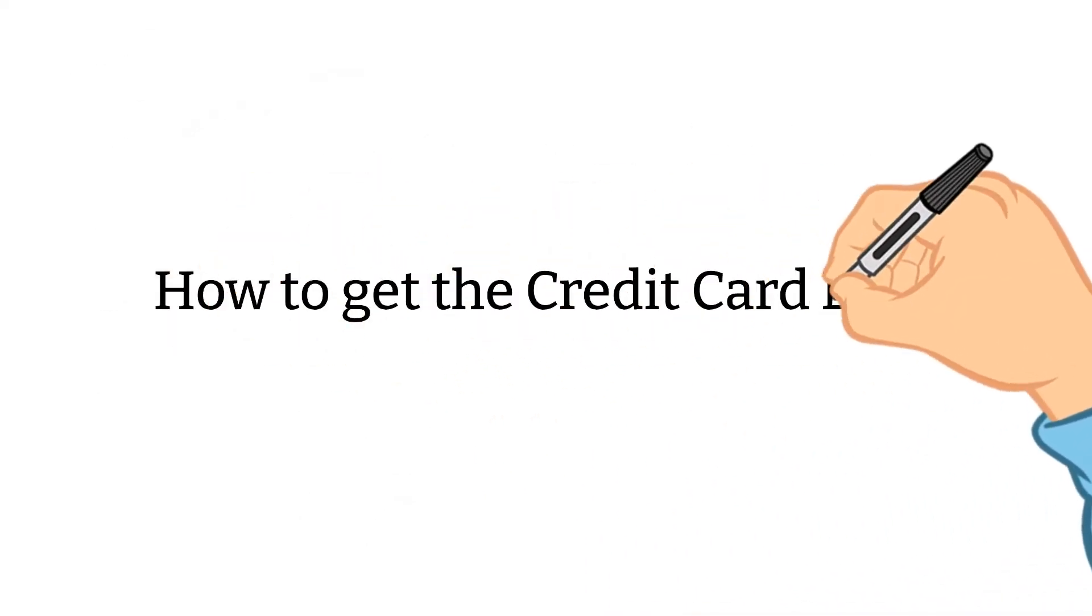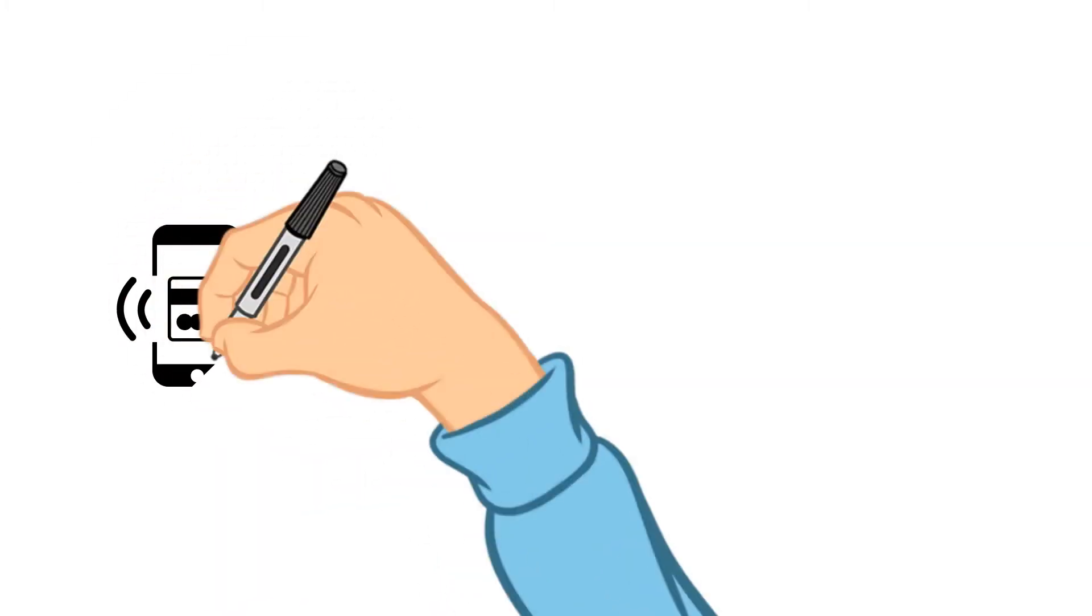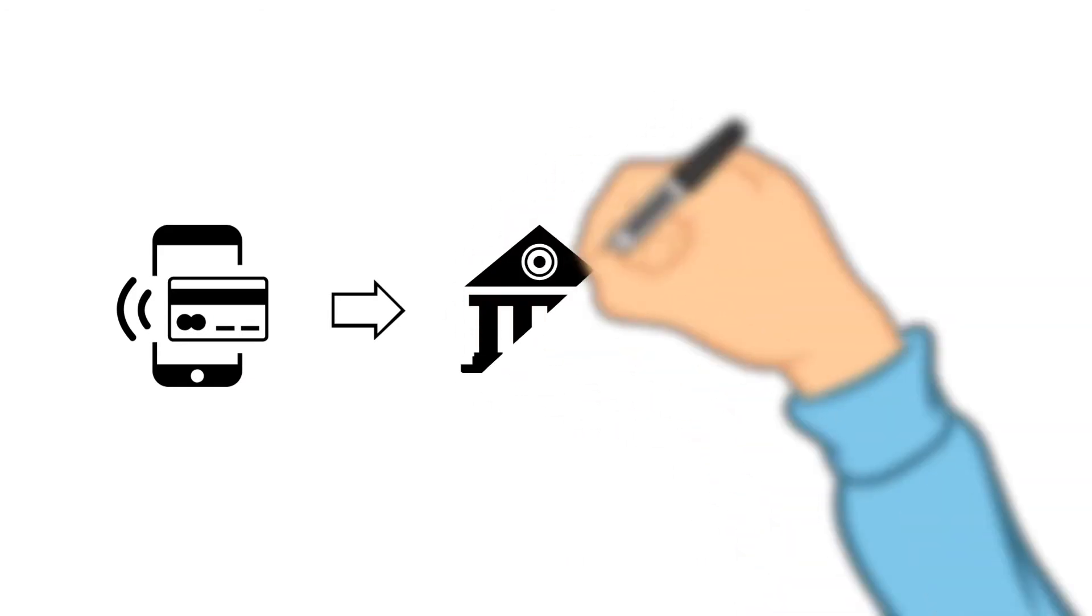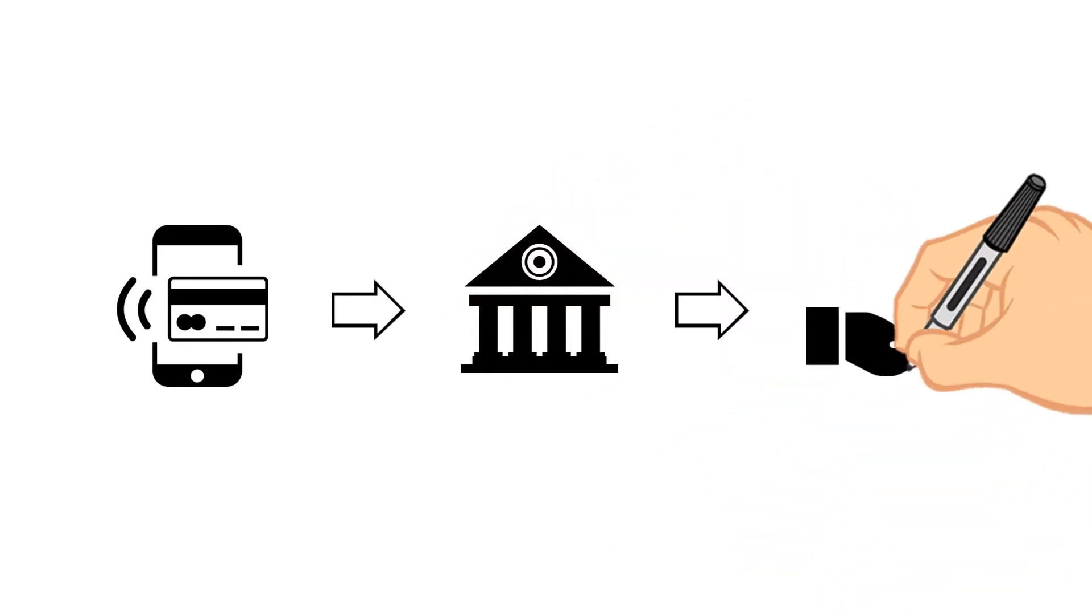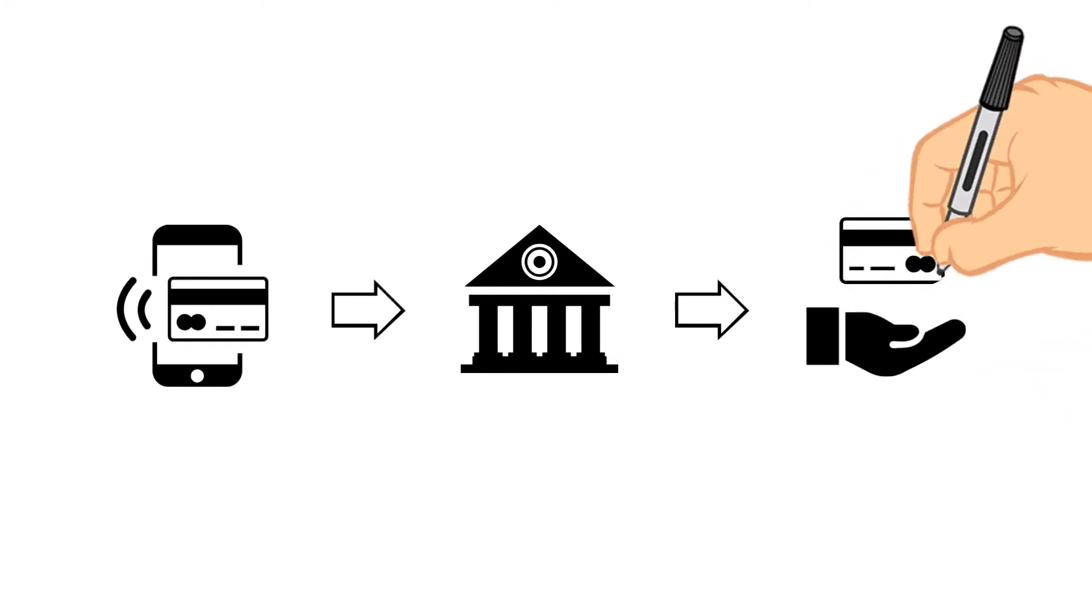How to get the credit card BIN? Firstly, a credit card transaction is made. The credit card info is sent to the card issuing bank. If the transaction was not rejected by the bank, you will receive the BIN.